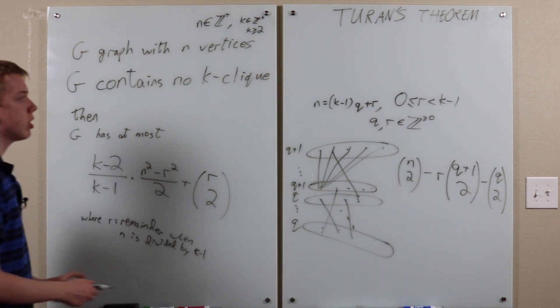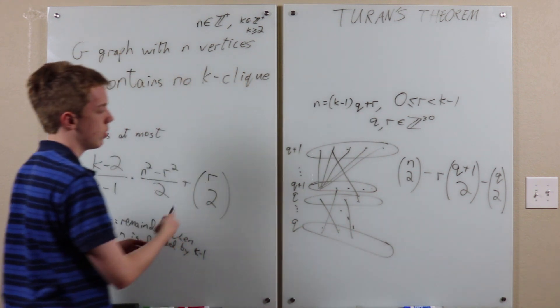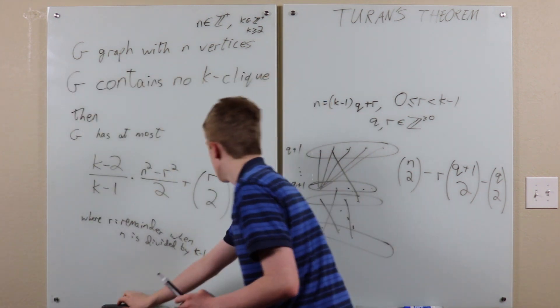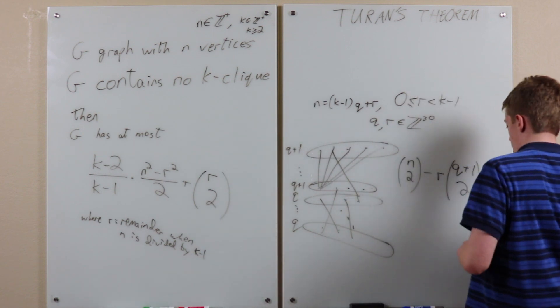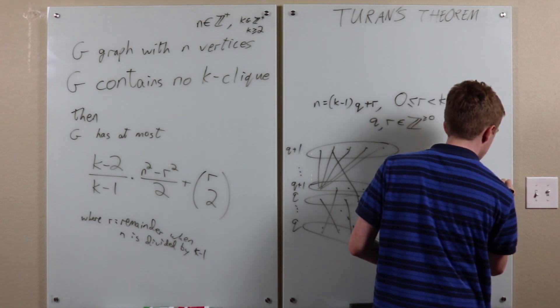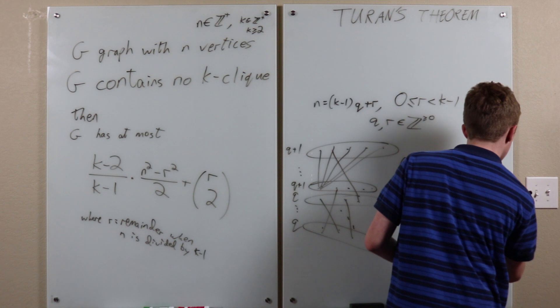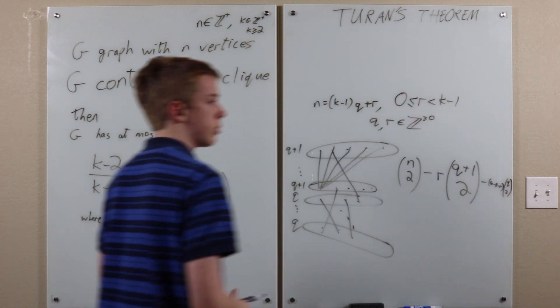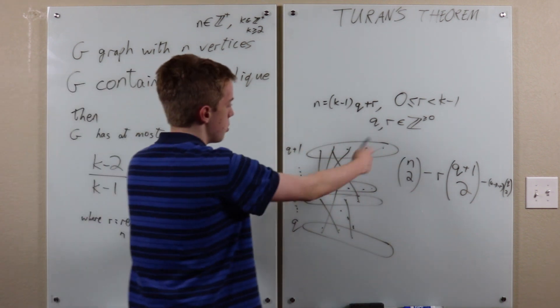And using this equation, there should be furthermore minus k minus 1 minus r times q choose 2. And it can be verified that these are equal. But this is just basically what you get by doing this.